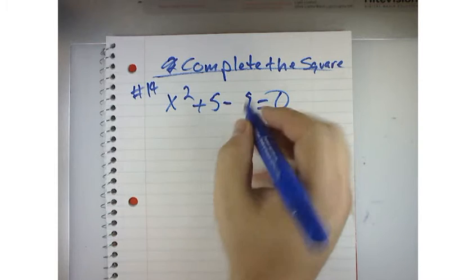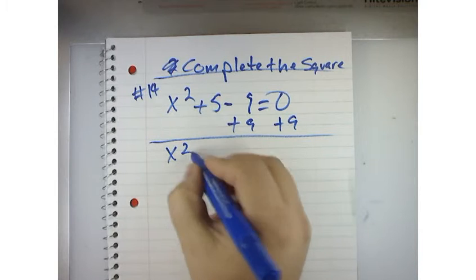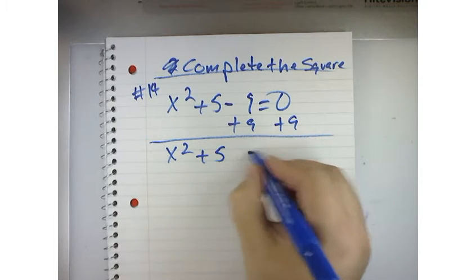What we're going to do is add 9 to both sides, and we get x squared plus 5x is equal to positive 9.